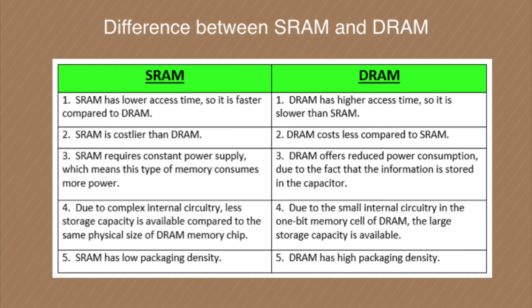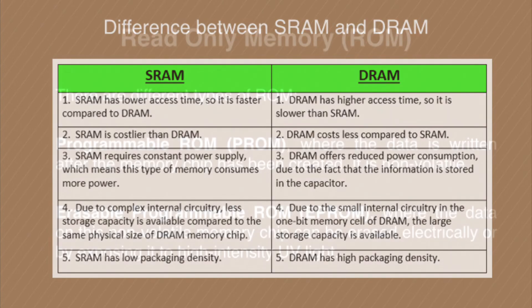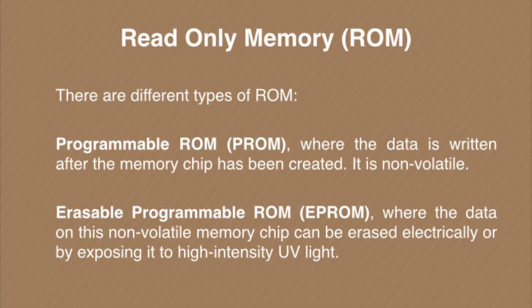Due to the small internal circuitry of DRAM, large storage capacity is available. SRAM has low packaging density, but DRAM has high packaging density. Now we will study the different types of ROM. There are two major categories: Programmable ROM and Erasable Programmable ROM.